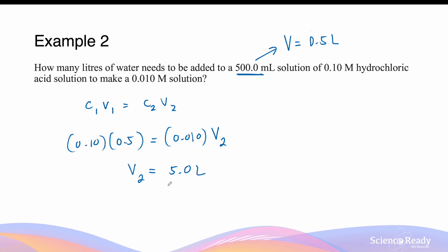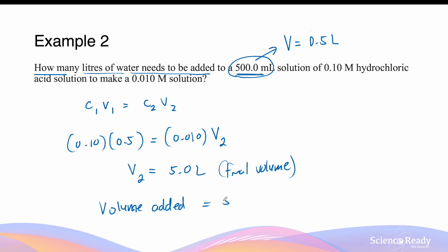This 5.0 liters is the final volume. We have to be very careful because the question asks how many liters of water need to be added, not the final volume. In the beginning, I already have 500 mL (0.5 L) of solution. So to get to 5 liters, I only need to add 5 − 0.5 = 4.5 liters. We'll leave this answer to two significant figures.